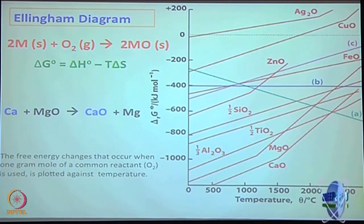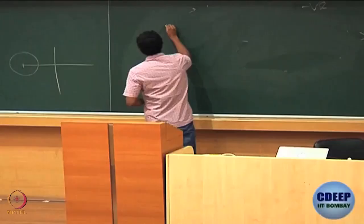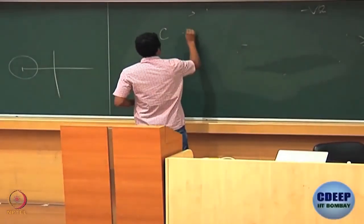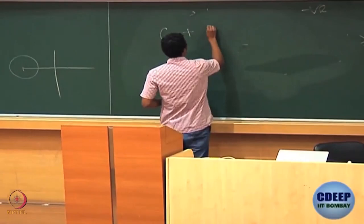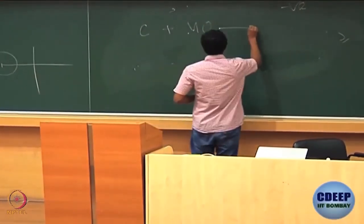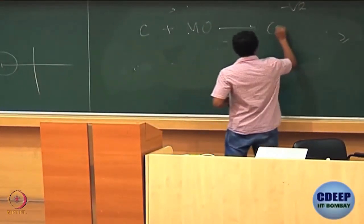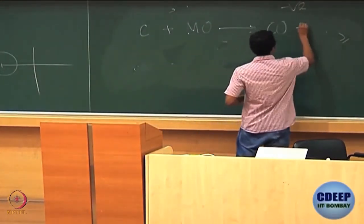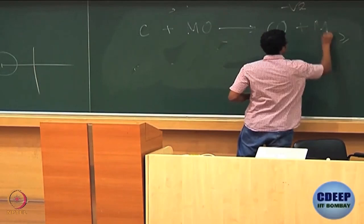That crossing temperature is the crucial temperature we are looking at: carbon plus metal oxide gives carbon monoxide plus metal.